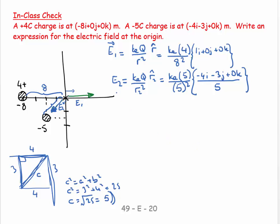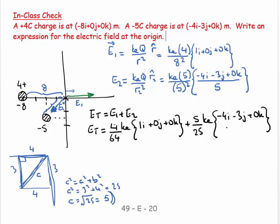So, let's clean up. I'm going to say, E total is equal to E1 plus E2. And so, E total would equal, that's 4 over 8 squared is 64 KE (1i plus 0j plus 0k), and 5 over 25 KE (minus 4i minus 3j plus 0k) over 5.